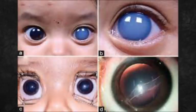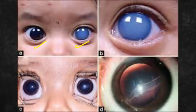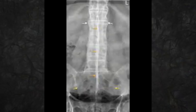Hello everyone. Today I will be telling you about the image-based questions that have been asked. This is the first question — both the eyes are involved and this is congenital glaucoma. Blue eyes, congenital glaucoma, both the eyes are involved.